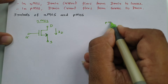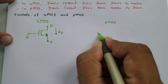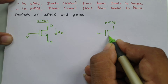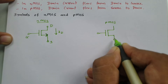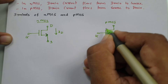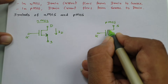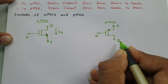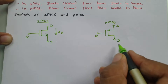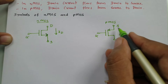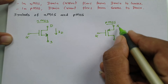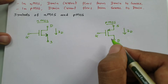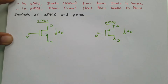For the basic PMOS symbol, we also have three terminals. There is a gate terminal, and the arrow at the source terminal points inward. The drain is on the other side. Since in PMOS current flows from source to drain, the direction of the arrow indicates the current direction. This is the basic three-terminal PMOS symbol.